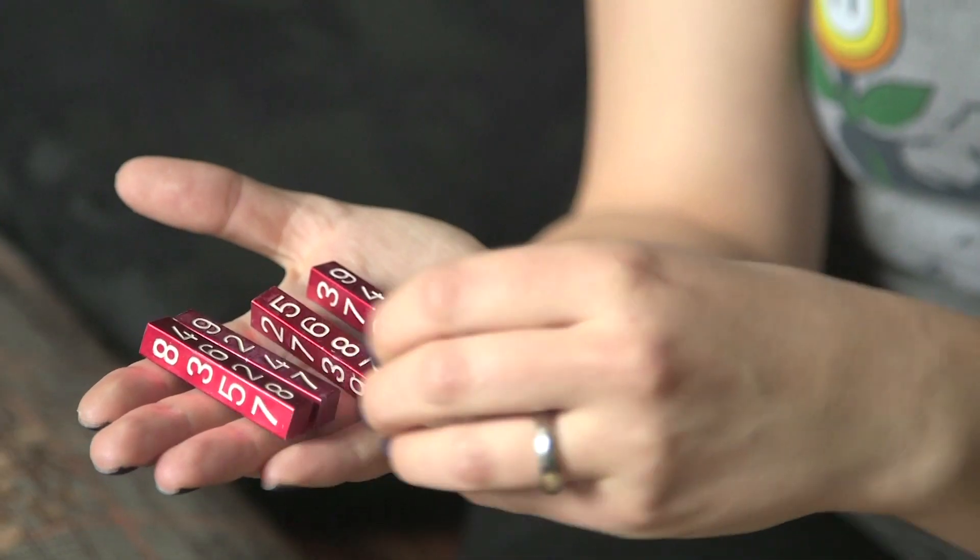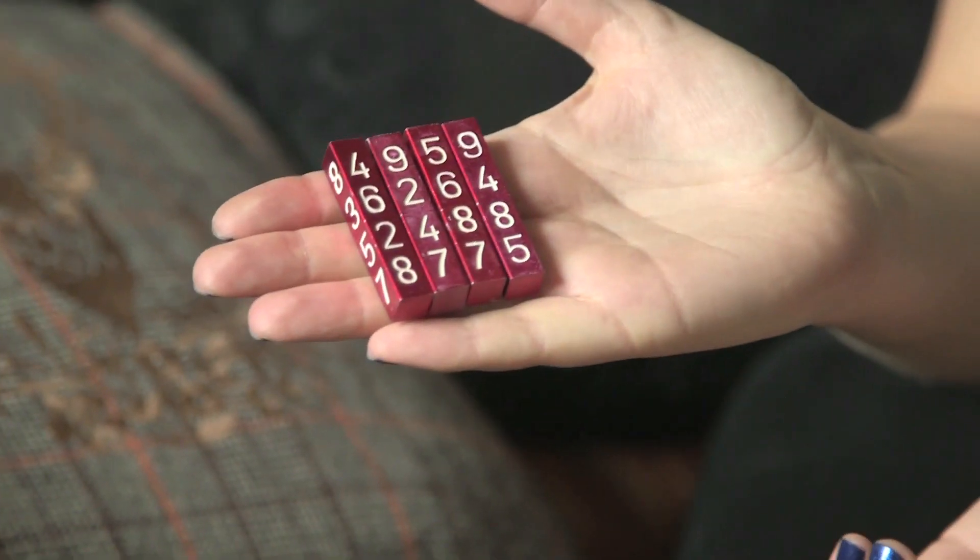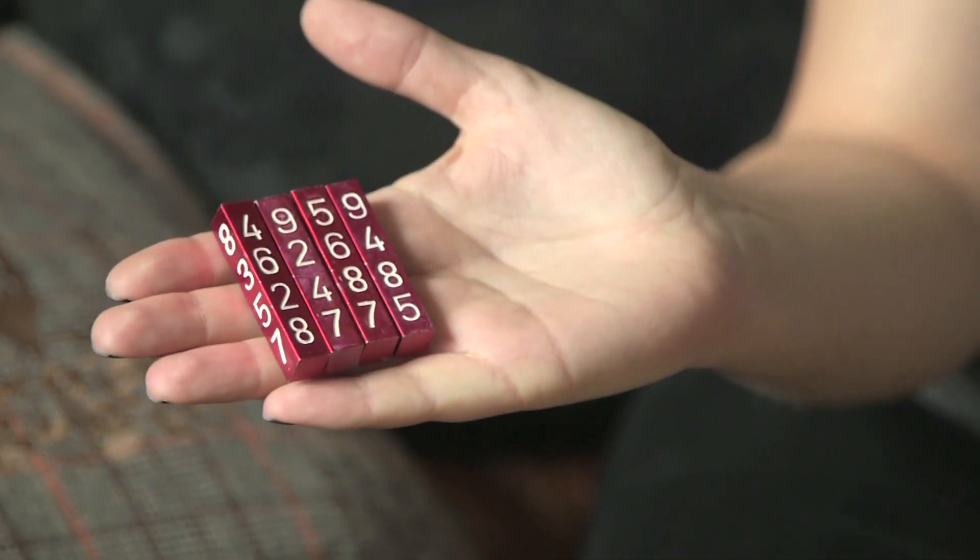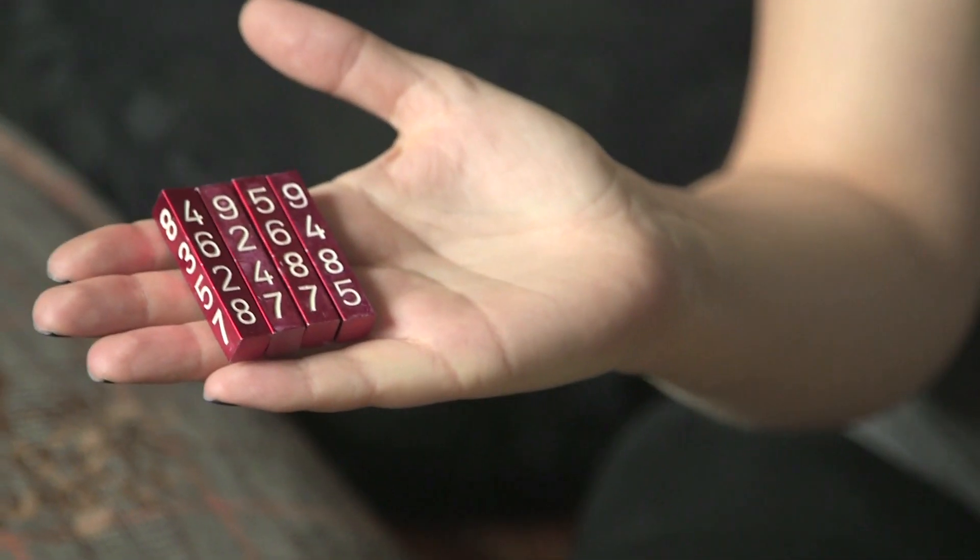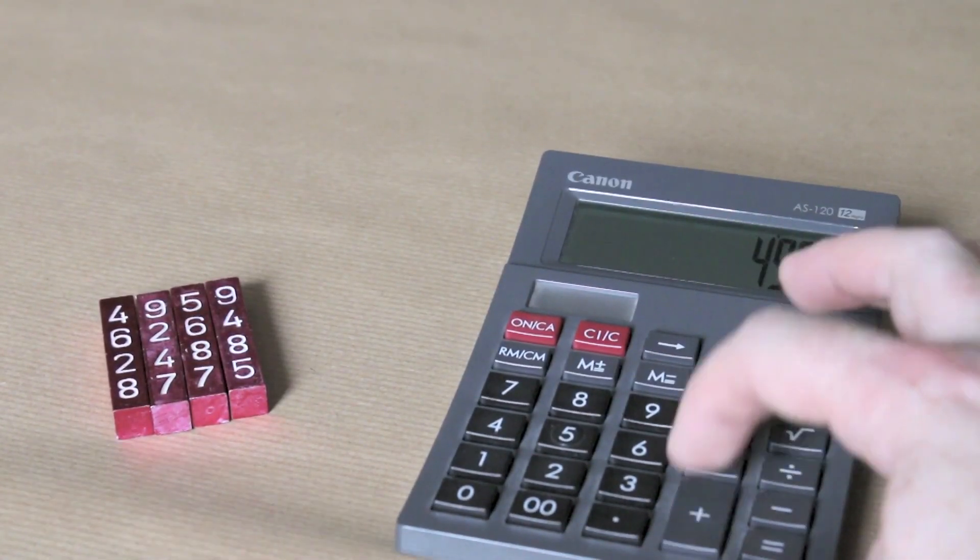So you've now created four four-digit numbers across the top. You've got 4,959 across the top there and then three other numbers as well. And I would like you to add up those four numbers. 49, 59. Oh, I'm not going to tell you this.